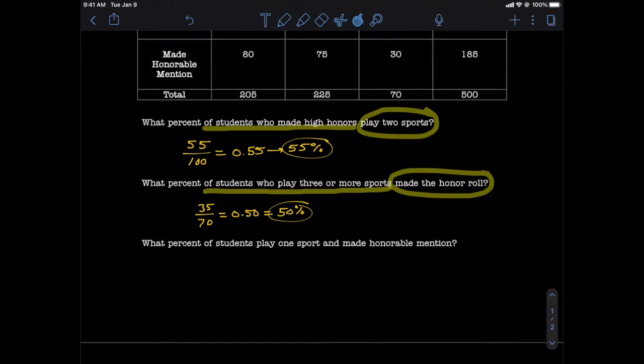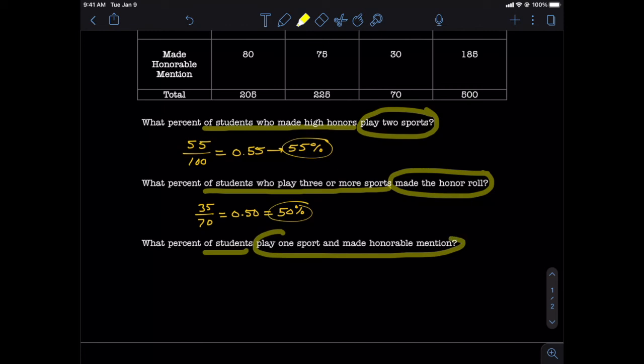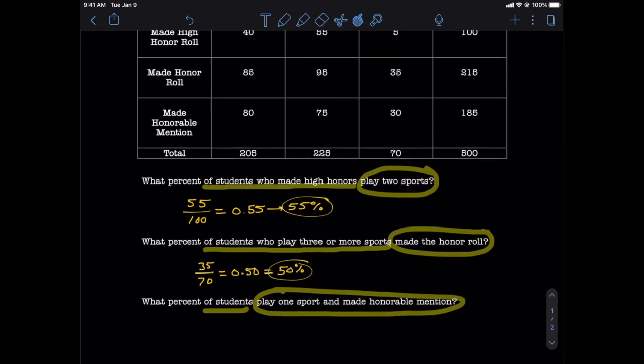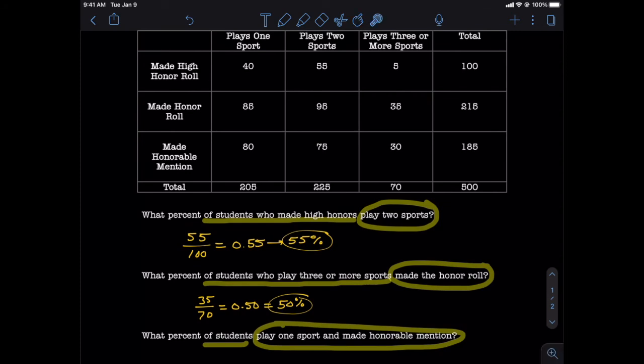Our last question asked us to find the percent of students who play one sport and made honorable mention. Notice we don't have a clear category after 'percent of,' but we do see that we want the intersection of one sport and honorable mention. And if we scroll up to our table here, we can find the intersection of those two categories, 80. Since we don't have a clear category after 'percent of,' we're going to use the grand total of 500.